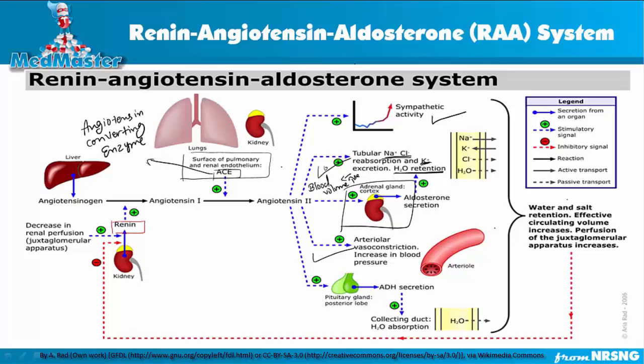Angiotensin 2 also has an effect on the adrenal gland. It goes to the adrenal gland and increases the secretion of aldosterone, which does the same thing: increases sodium reabsorption, increases potassium excretion, and increases water reabsorption, thereby increasing blood volume.